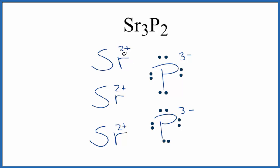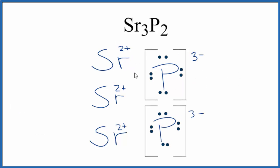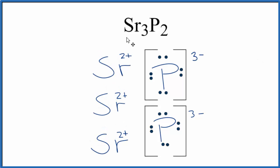And since the strontiums lost their electrons, we want to show that they're lost, that these electrons aren't shared. Let's put brackets around each phosphorus. You'll often see brackets put around the positive ion as well. So this is the Lewis structure for strontium phosphide, Sr₃P₂.